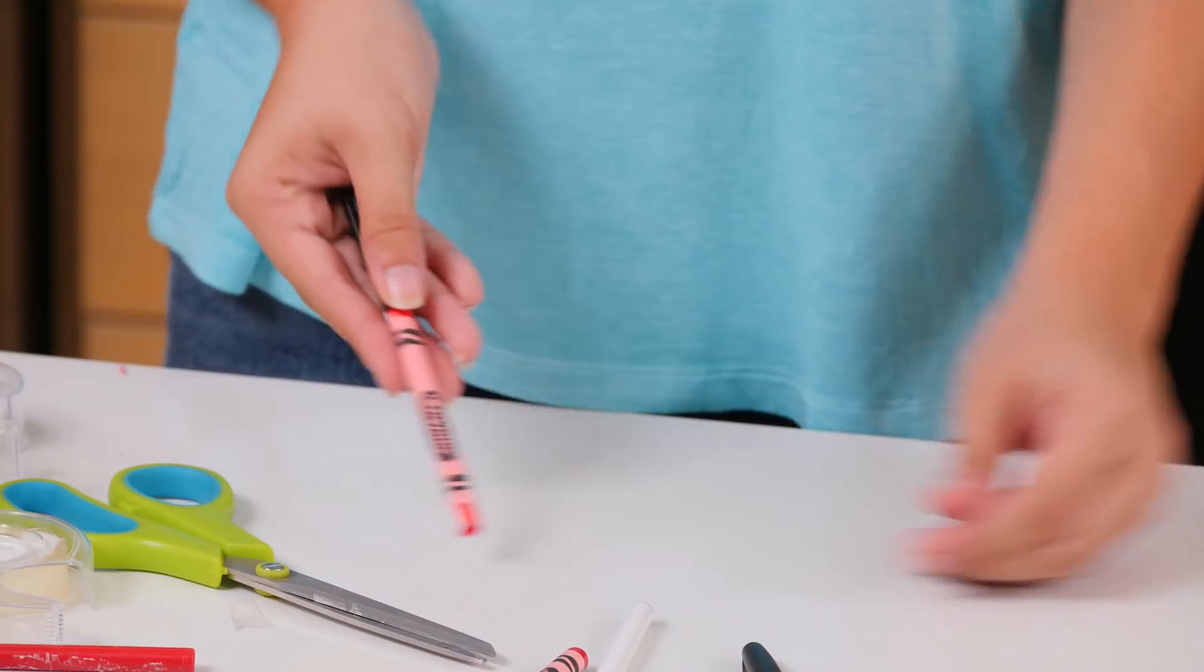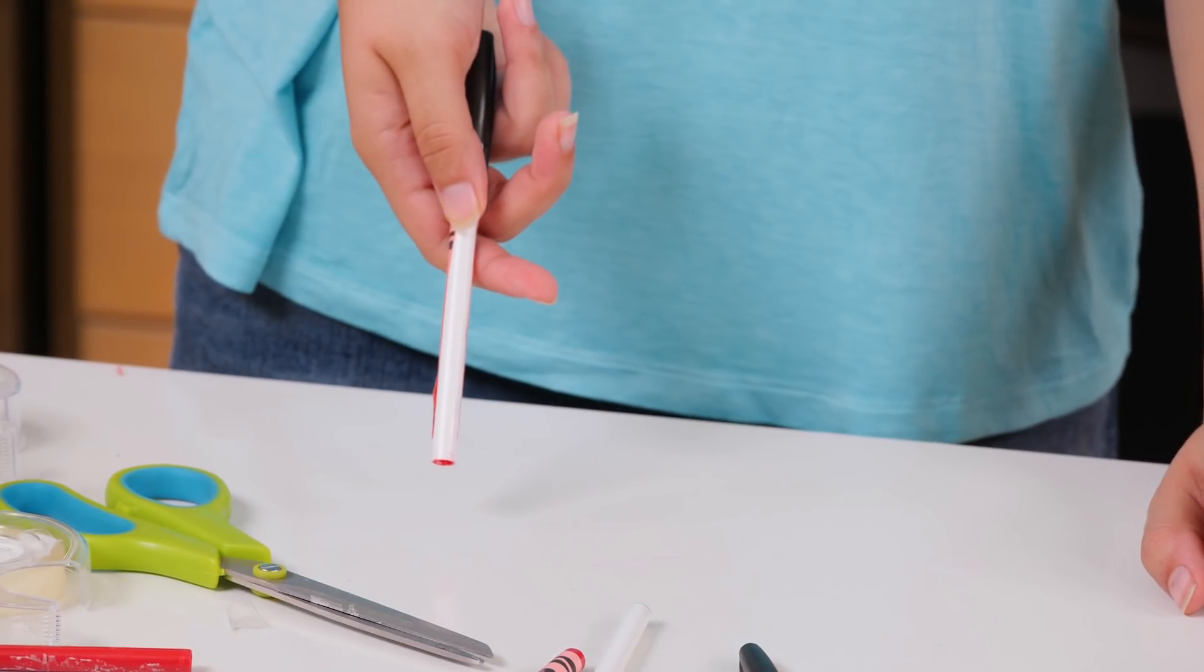And there you have it, a crayon on one side and a pen on the other. Repeat these steps for your second pen. And that's all the prep. Now for the trick.